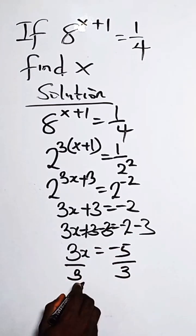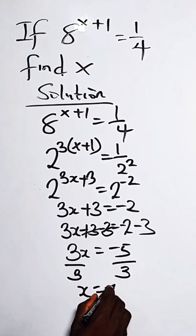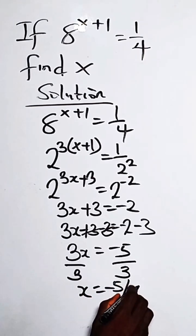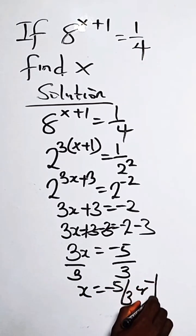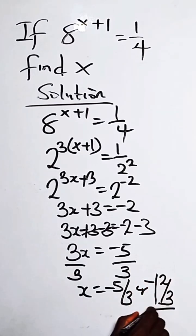We divide both sides by 3 to get the value of x. So x equals minus 5 over 3, or we can write it as minus 1 and 2 over 3. Thank you very much.